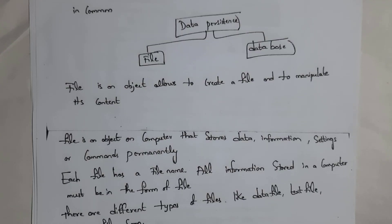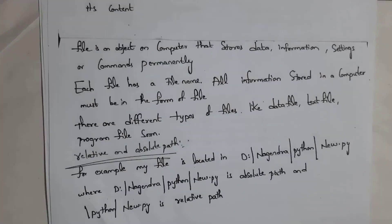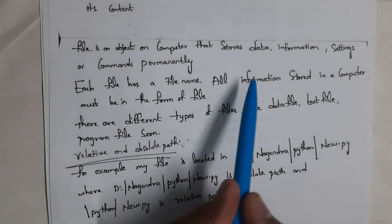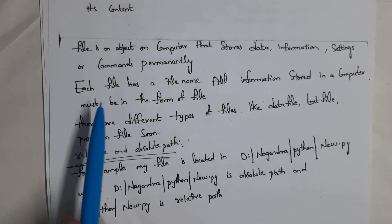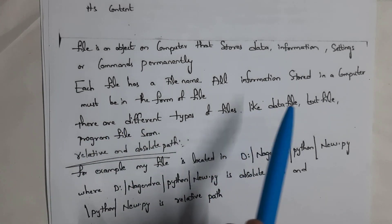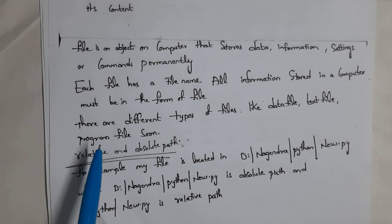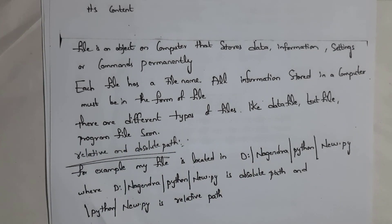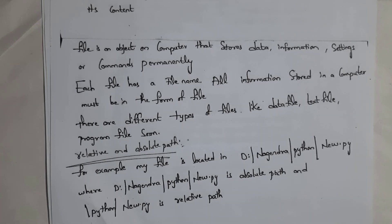If you store data in file or database, then later on you can perform various operations on that particular data — like you can modify data, you can delete data, and so on. Every file contains a file name. All information stored in a computer must be in the form of a file. There are different types of files like data file, text file, program file, and so on. For example, file.txt is a text file, and program.py is a Python file.